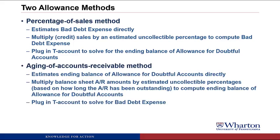The second method is called the aging of accounts receivable method. This method estimates the ending balance of the allowance for doubtful accounts directly. You multiply the accounts receivable on the balance sheet by estimated uncollectible percentages. It's called an aging method because the percentages are different based on how long the accounts receivable are outstanding. For example, accounts receivable outstanding for less than 30 days will have a smaller percentage than those outstanding for more than 90 days. Once you multiply all the accounts receivable by the percent you expect not to collect, it gives you an ending balance for allowance for doubtful accounts. You plug that into your T account and that allows you to solve for bad debt expense.